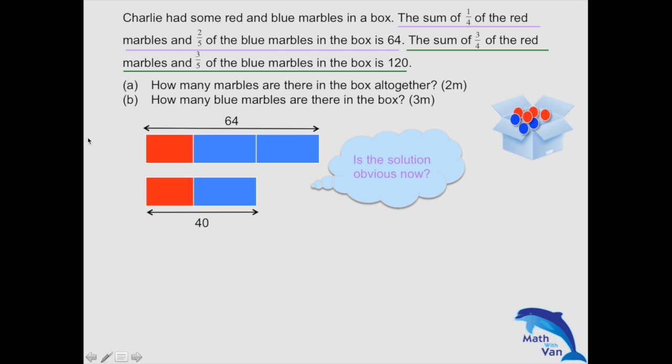By holding the red the same, you can now attribute whatever difference in the value, 64 and 40, to be due to the difference in the number of blue blocks. And you can find the answer easily.